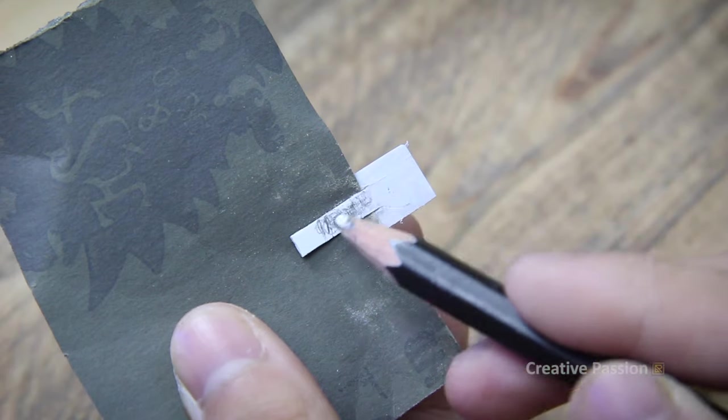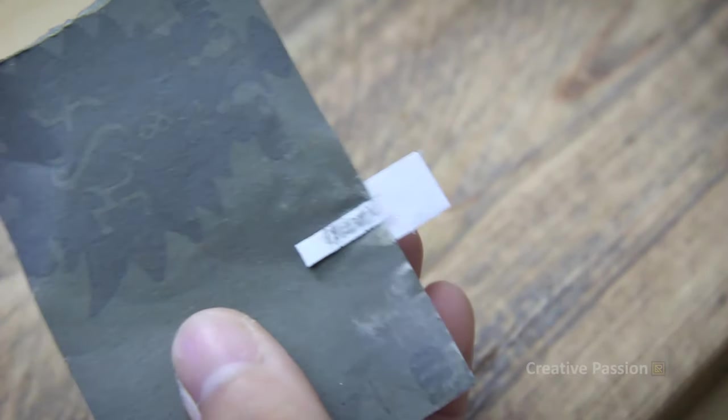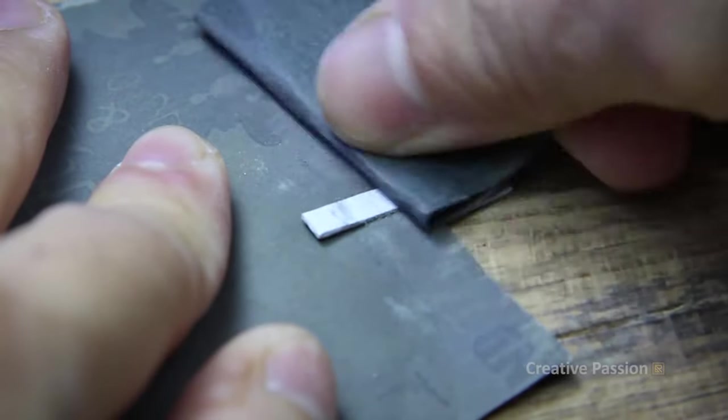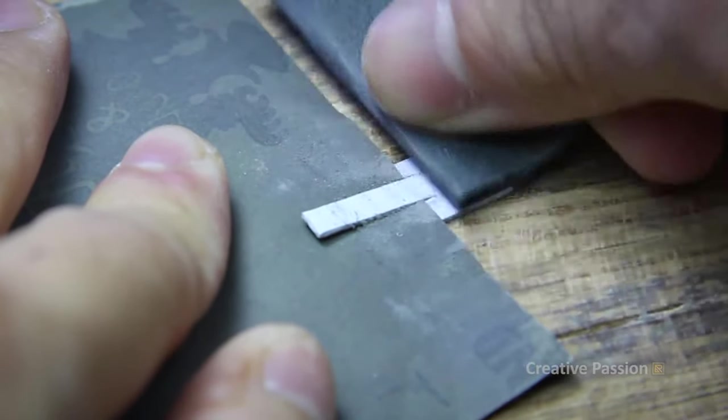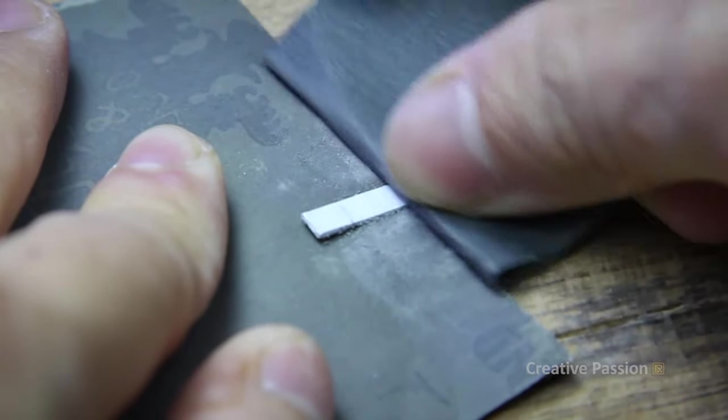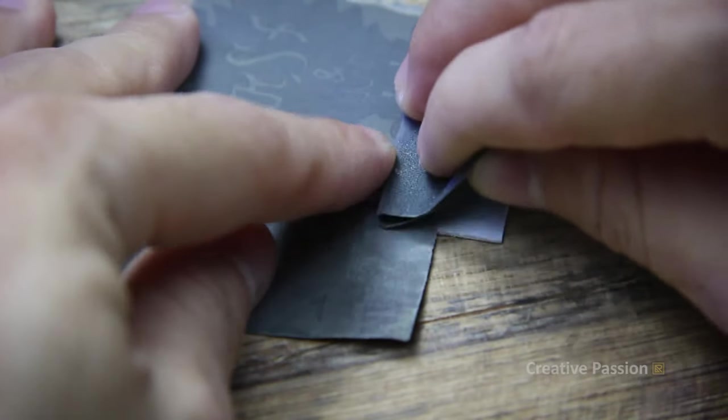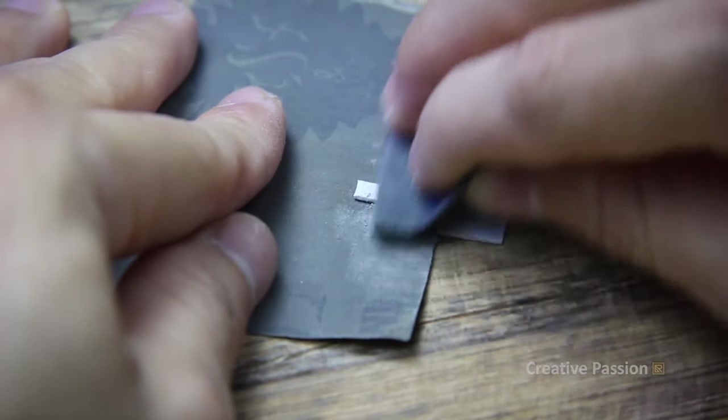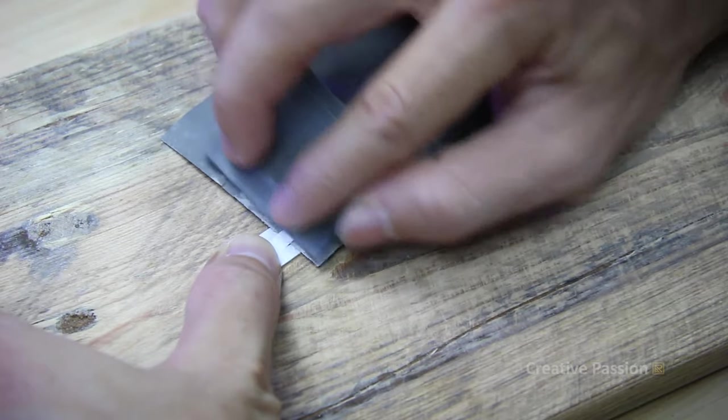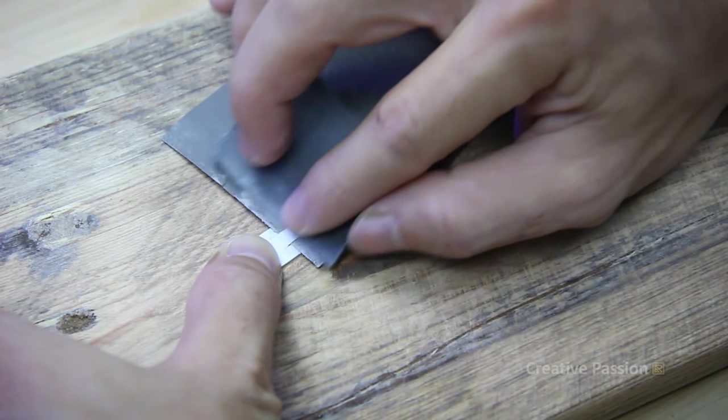In this step we will divide the reed blade into 3 parts and only sand the 2/3 darkened area here. Sand slowly, everyone. We sand until we can blow and get a sound.